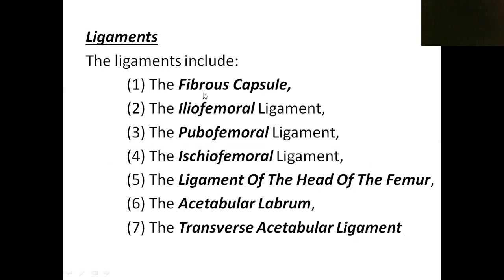The supporting factors or ligaments of the hip joint include: the fibrous capsule, then the iliofemoral ligament, pubofemoral ligament, and ischiofemoral ligament. The hip bone has three parts — ilium, pubis, and ischium — so these ligaments run from those parts to the femur. Additionally, the ligament of head of femur, acetabular labrum, and transverse acetabular ligament also support the joint.